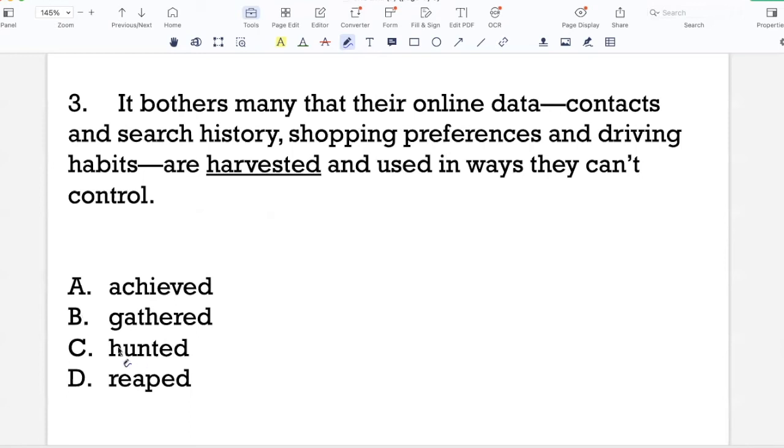So if you look at the options, online data are achieved, gathered, hunted or reaped. So the best option is gathered. It bothers many that their online data are systematically gathered by tech companies and then used for different purposes. So I like B.